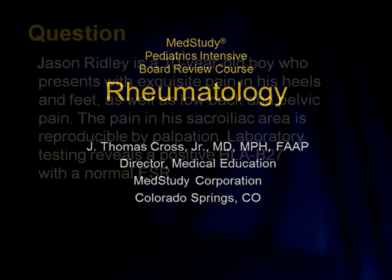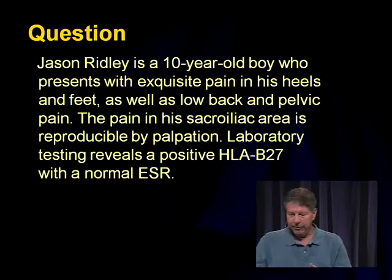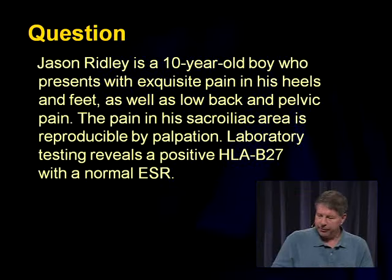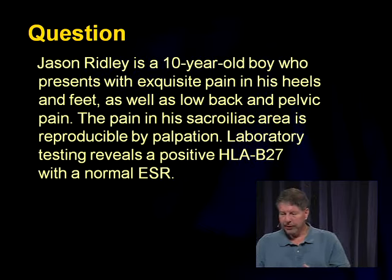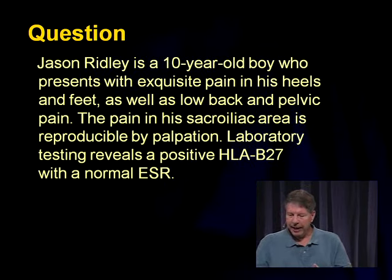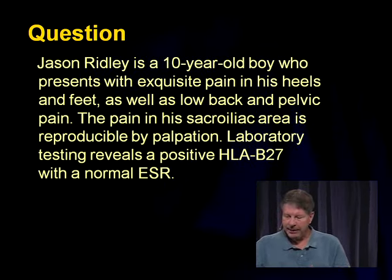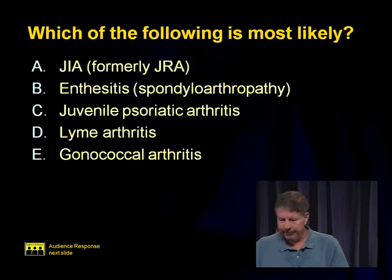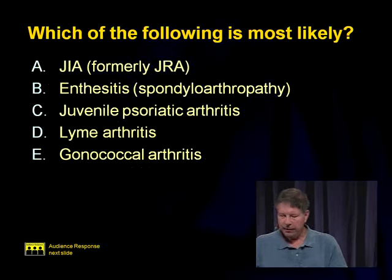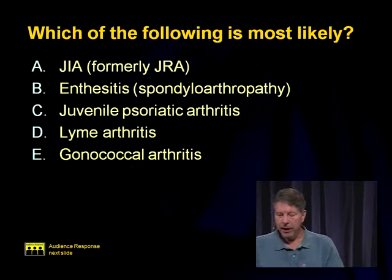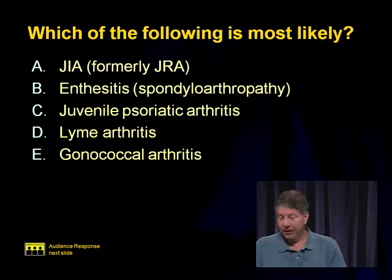What I want to do first is just start with the case. This is Jason, a 10-year-old boy who presents with exquisite pain in his heels and feet as well as low back and pelvic pain. The pain in the sacroiliac area is reproducible by palpation. A lab test reveals a positive HLA-B27 with a normal SED rate. Which of the following is most likely: juvenile inflammatory arthritis (formerly JRA), enthesitis (formerly spondyloarthropathy), juvenile psoriatic arthritis, Lyme arthritis, or gonococcal arthritis?